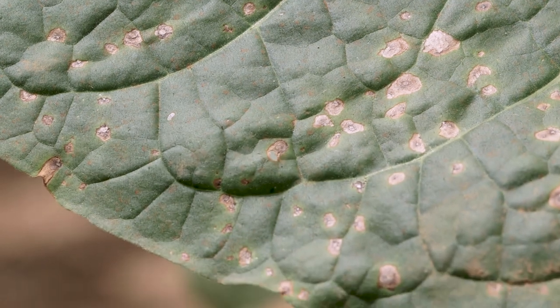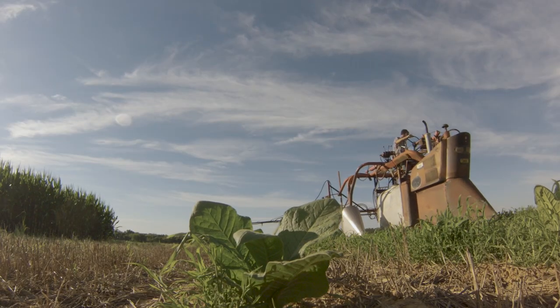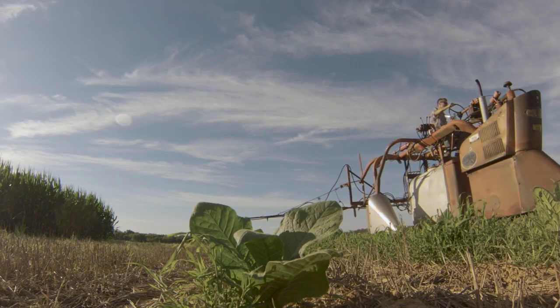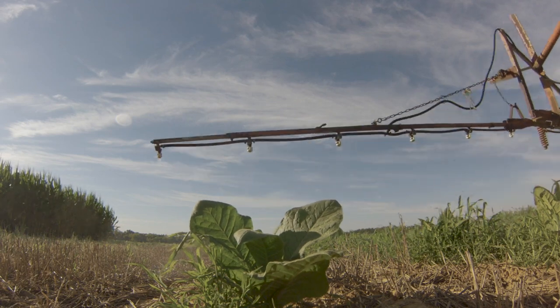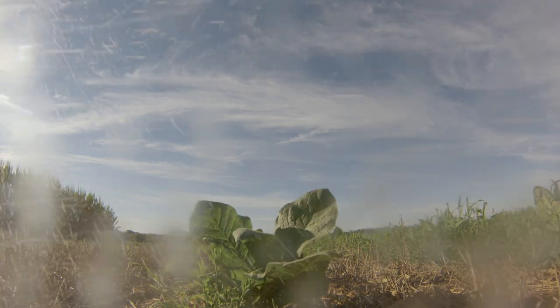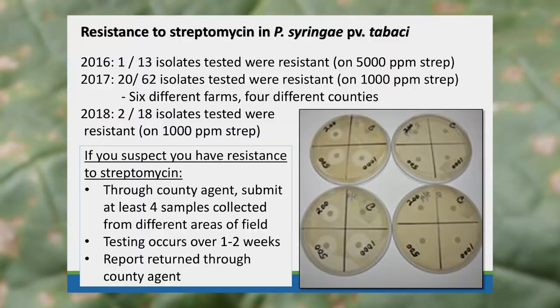The main way that growers are managing angular leaf spot in dark tobacco is by using streptomycin, which is a common antibiotic. What we've found over the past couple of years is that there are some growers that have issues with resistance to streptomycin.